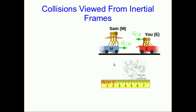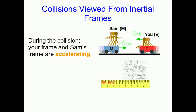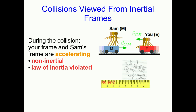So far, we've been looking at carts moving at constant velocity. But what we really want to look at is collisions. And then we're going to hit a problem, because during the collision the carts accelerate. And so if you and Sam are riding along on the carts, then you are accelerating, and that puts you into non-inertial reference frames. What we saw in the last lecture was that the law of inertia is violated in those frames. We really don't want to work in non-inertial frames. If you take a more advanced course, you'll learn how — there are ways to do it — but for now it's just confusing, and we should avoid it.